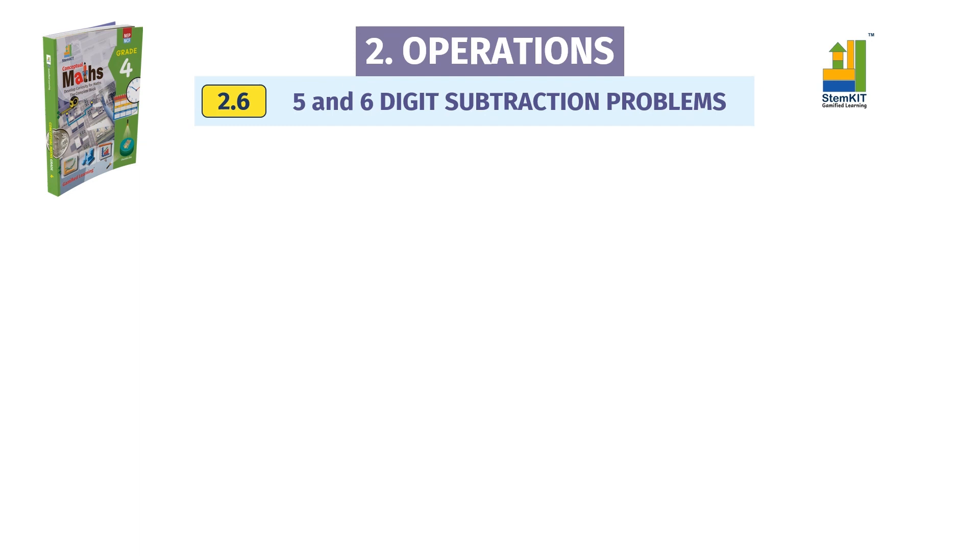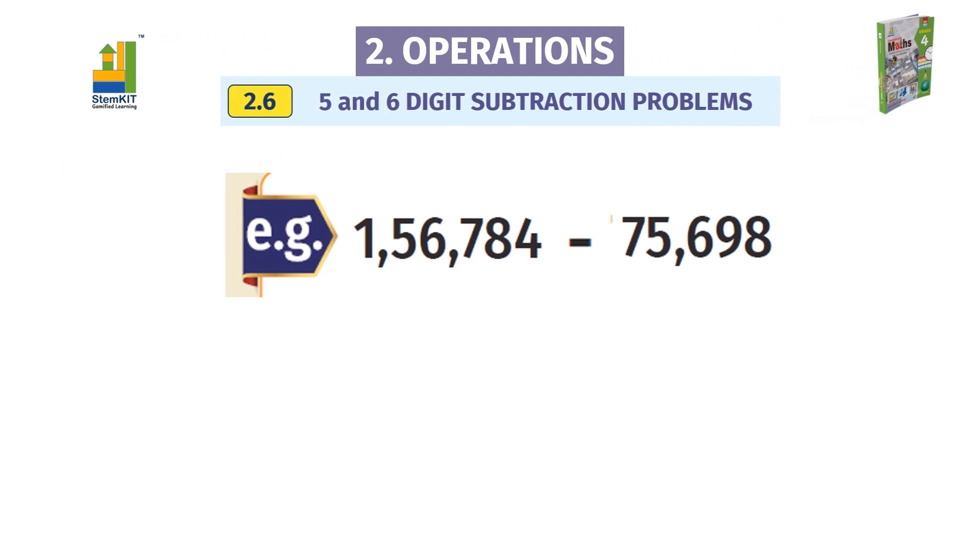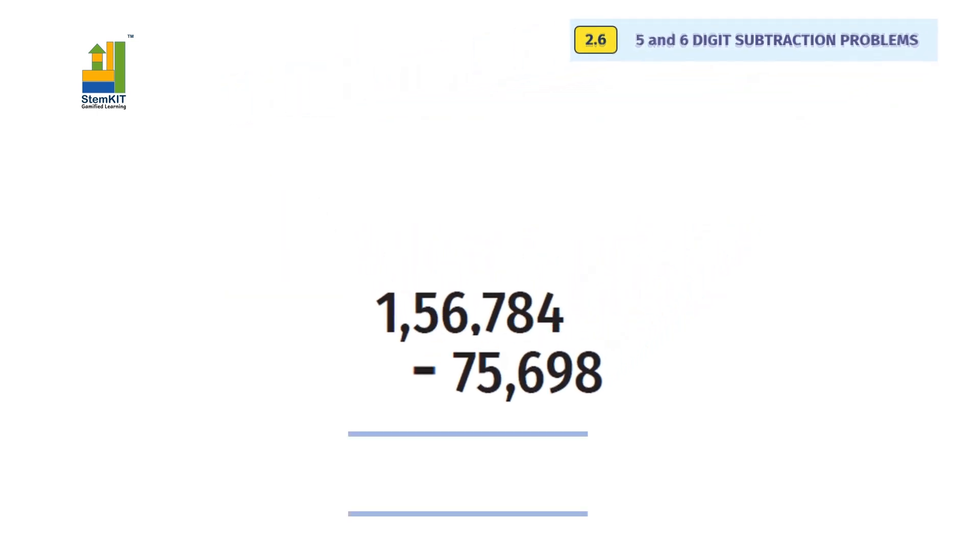Let us take an example from the book. Look at this subtraction. An important step is writing the smaller number below the bigger number, aligned by place value.